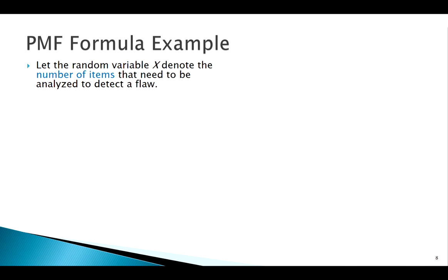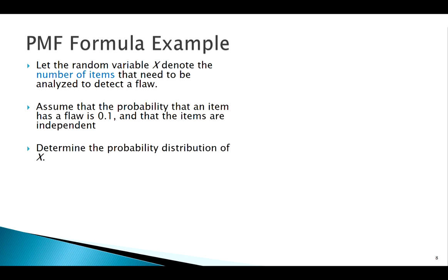Let's just say that the probability that we see a flaw is about 0.1 or 10 percent, and we can assume independence. So we want to look at this probability distribution.